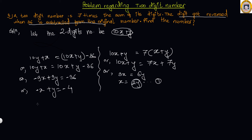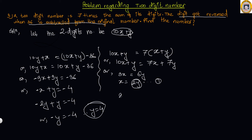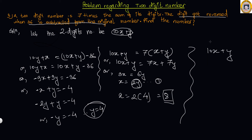Substituting X equals 2Y: negative 2Y plus Y equals negative 4, so negative Y equals negative 4, meaning Y equals 4. Substituting Y equals 4 into equation 1 gives X equals 2 times 4 equals 8. The required number is 10X plus Y equals 10 times 8 plus 4 equals 80 plus 4, which is 84. The two-digit number is 84.